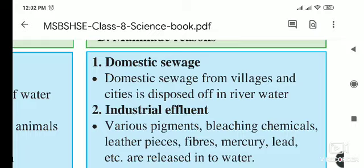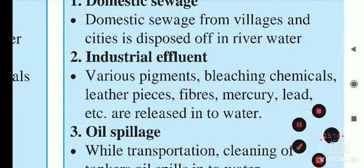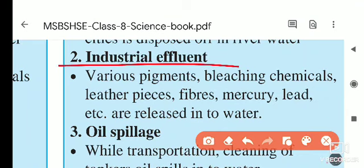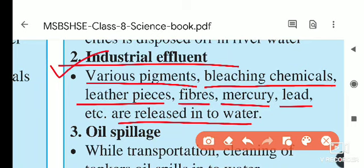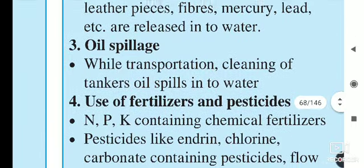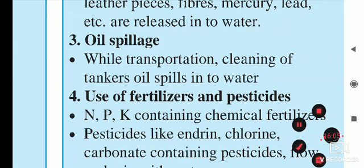The second man-made reason is industrial effluents. Various pigments used for coloring and bleaching, leather pieces, fibers, mercury, and lead are released into the water from industries. Textile, sugar, and steel industries use bleaching chemicals and produce leather and fibers, and when these industrial by-products are released into water, they cause water pollution.